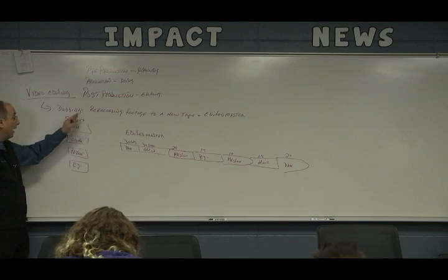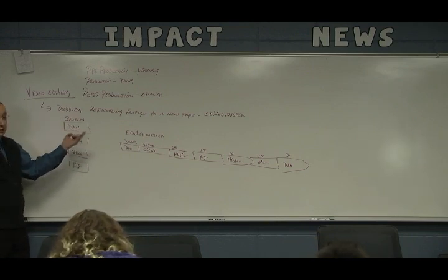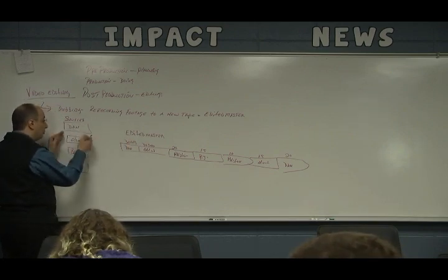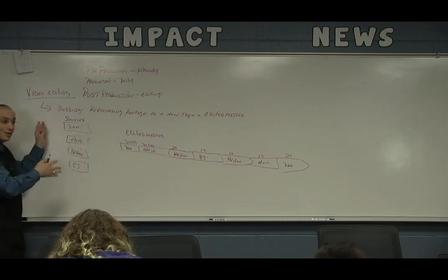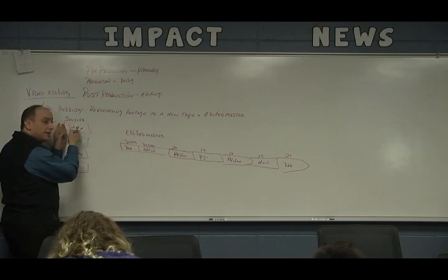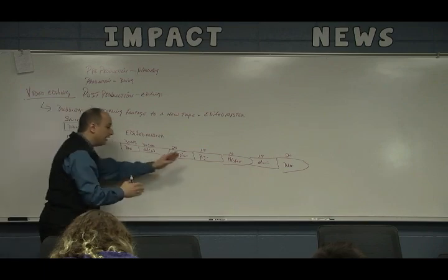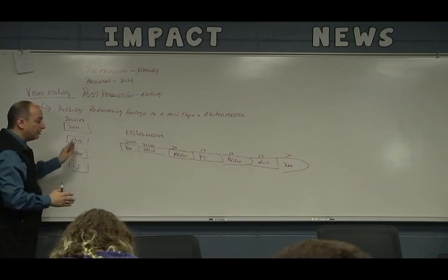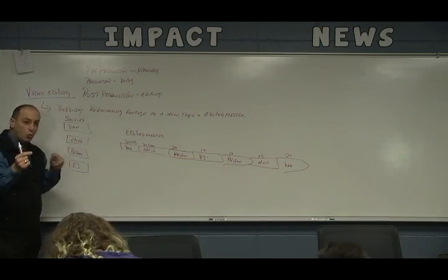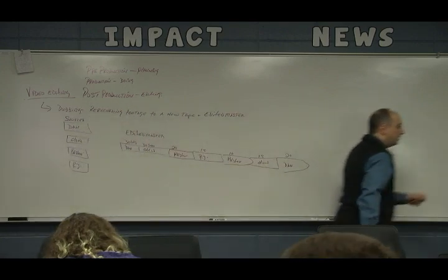When you're dubbing, you're copying one tape to another — that's all it is. Videotape editing was copying one tape to another, leaving the original source intact. So you're making a new tape recording 30 seconds from Dan, 30 seconds from Olivia, 30 seconds from Ralston, 15 seconds from RJ, and so on — the sections you want — arranging them on the Edited Master in a sequence.